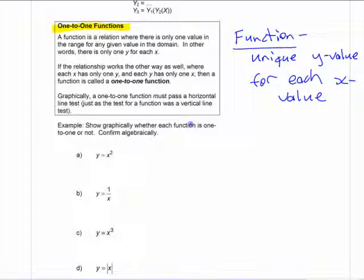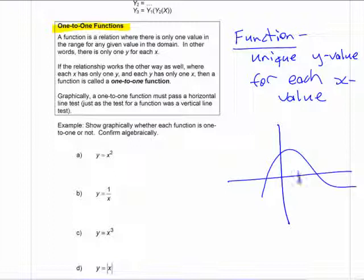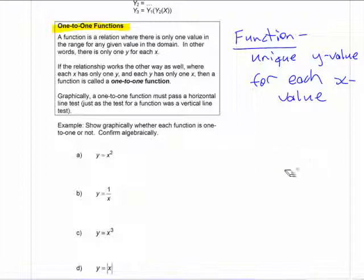That's kind of a one-way relationship, because you could have two x values that have the same y value. As long as any x value you pick only has one y value, then it's a function. But if that relationship holds the other way around as well, then it's a one-to-one function.